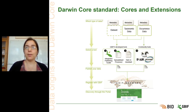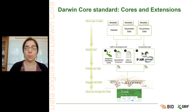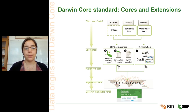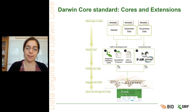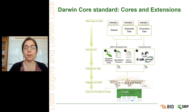On these slides, you can see the Darwin Core standard and how the publishing process works in GBIF. At the top of the slides, you can see the types of data you can publish. You can have metadata-only datasets, where you only share the description of your dataset but not actual data. When sharing actual data, you can have taxonomic data, such as checklists or taxonomic reference charts.